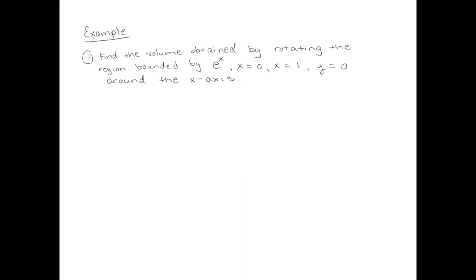Alright, so here's the problem we're going to do: rotating the region bounded by e to the x, x equals 0, x equals 1, y equals 0 around the x-axis. In order to draw this, I really have to read carefully. We need to draw e to the x, x equals 0, that's a vertical line, and x equals 1, that's a vertical line as well. y equals 0 is the bottom part over here. So here's the region in question.